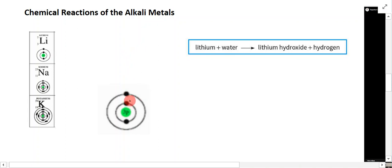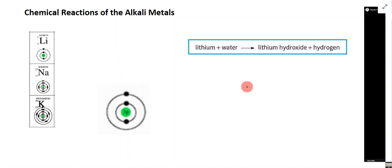What an atom is trying to do is get a full outer shell. It can do that by taking electrons from other atoms, losing some of its own electrons, or sharing electrons with another atom. Chemical reactions are really the movement of electrons between atoms — they're either taken by one atom, given up by another, or shared. What underlies chemical reactions is the movement of these subatomic particles known as electrons.